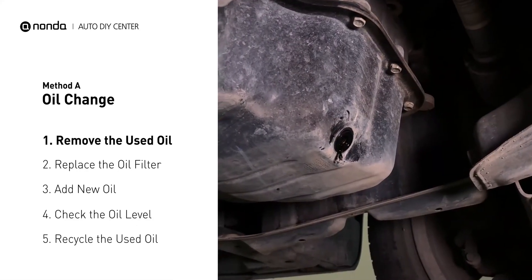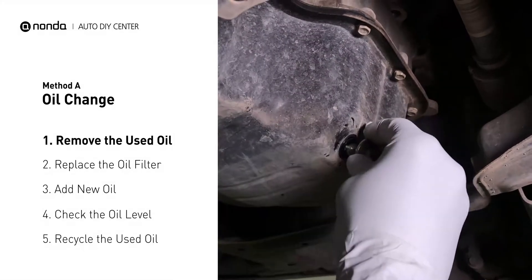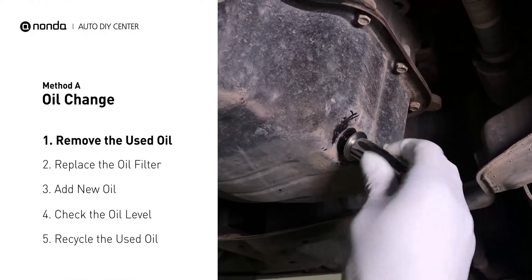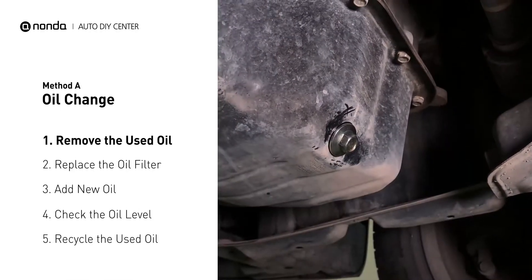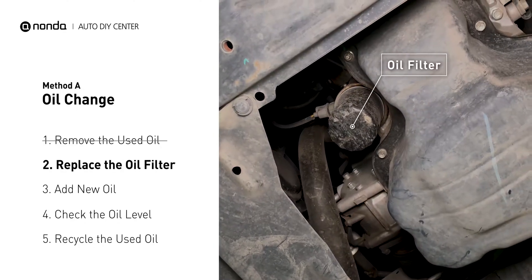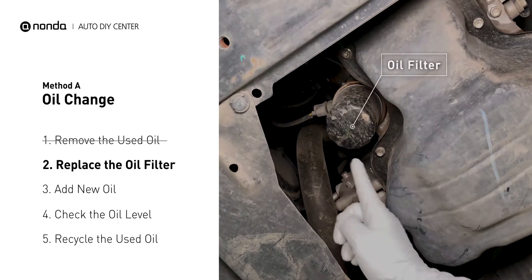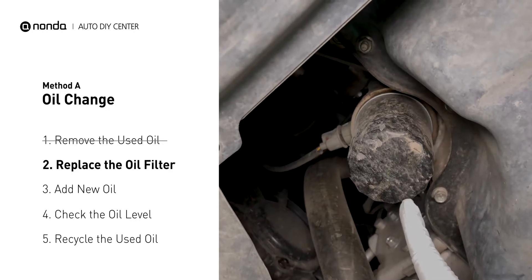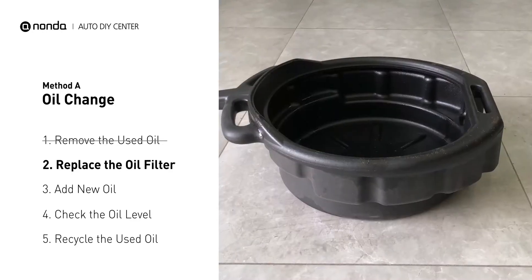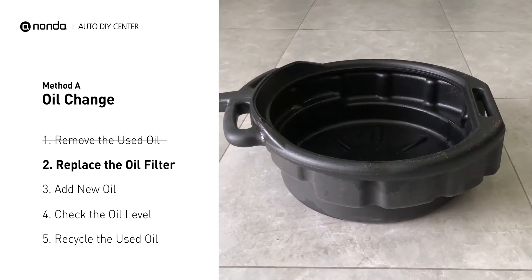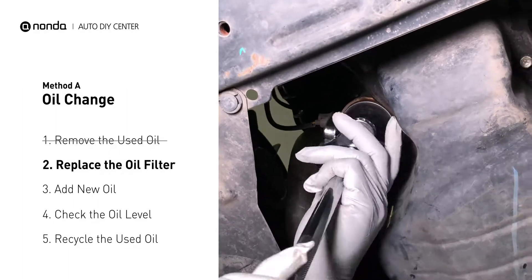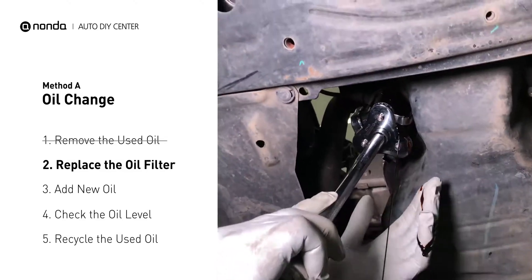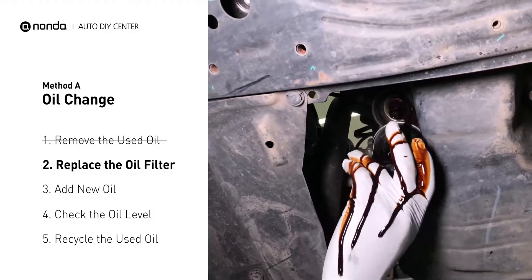Once all the oil is drained, replace the drain plug and tighten it back on. The oil filter is usually located beside the oil pan or under the hood of your vehicle near the engine. Place the collection pan under the filter. There would be oil in the filter itself that could be hot, so it is important that the oil goes into the collection pan.